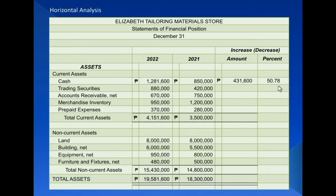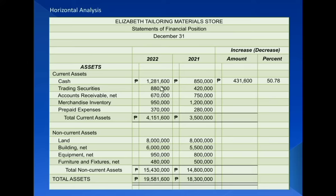But how many percent is the increase? The amount of increase, which is P431,600, divided by the earlier period's amount, which is P850,000, then multiplied by 100, equals 50.78% rounded off. We multiply by 100 because we are computing for the increase or decrease in terms of percent. Please be very careful in the amount you use as divisor — P850,000, not P1,281,600 — because we have to use the earlier period, in this case 2021, which is earlier than 2022, as the base.